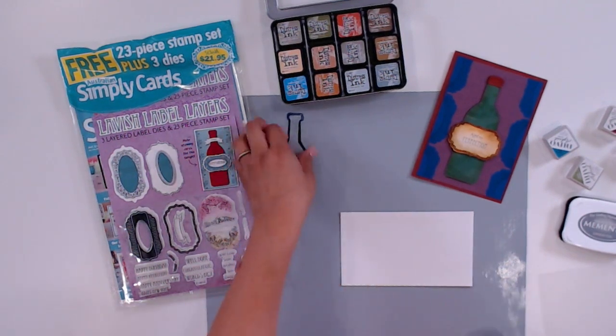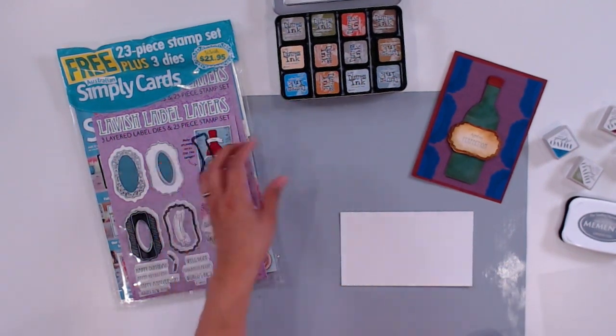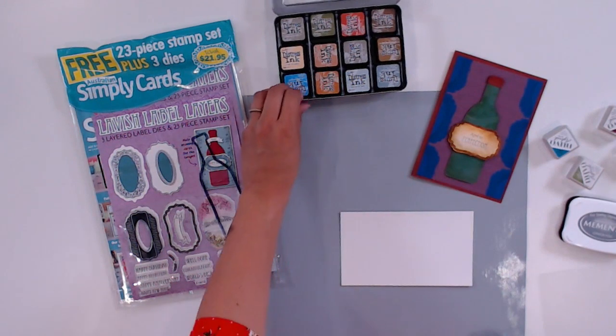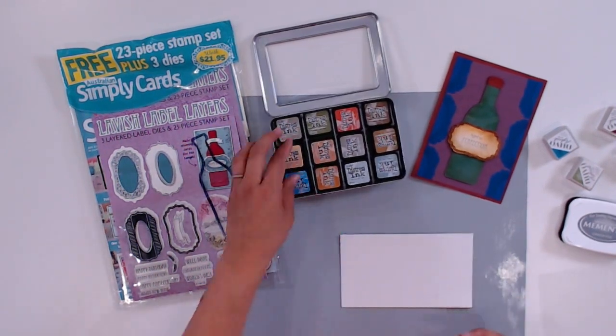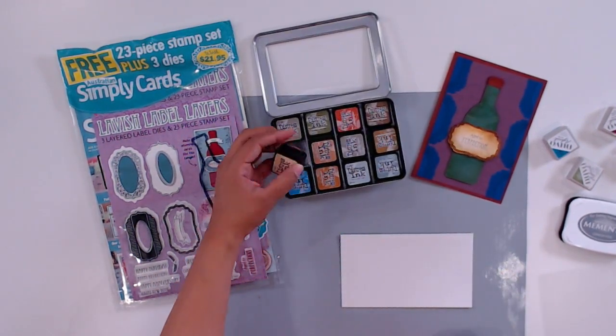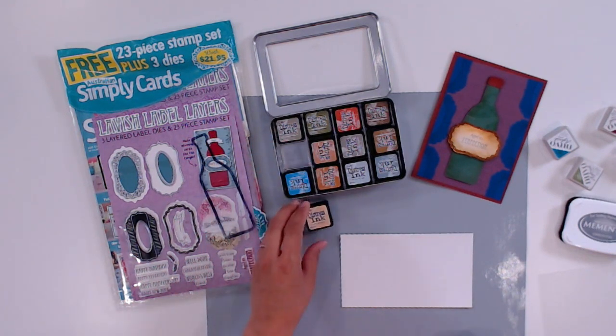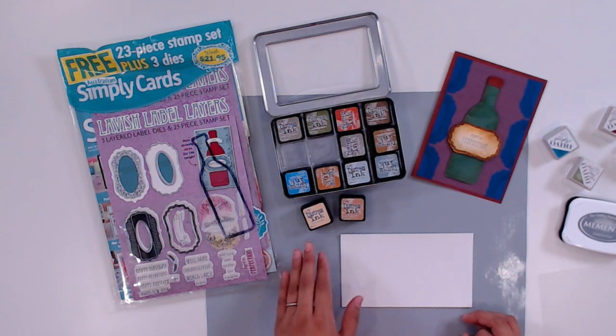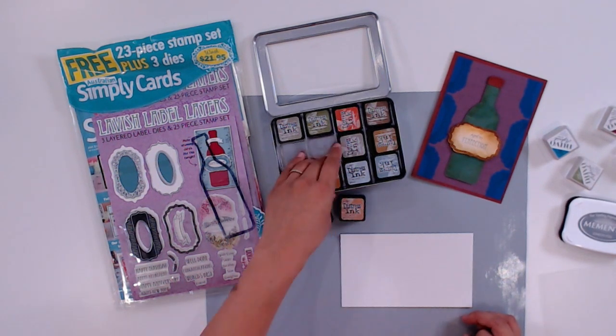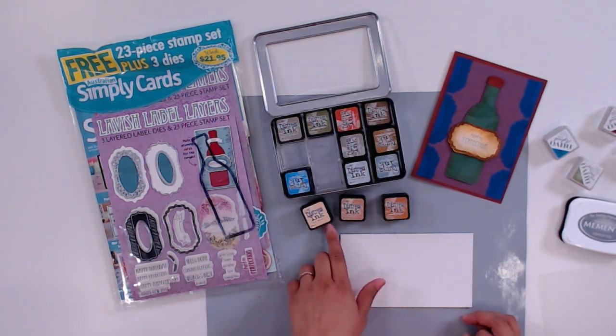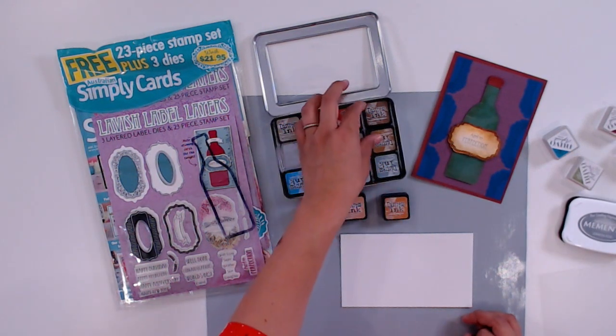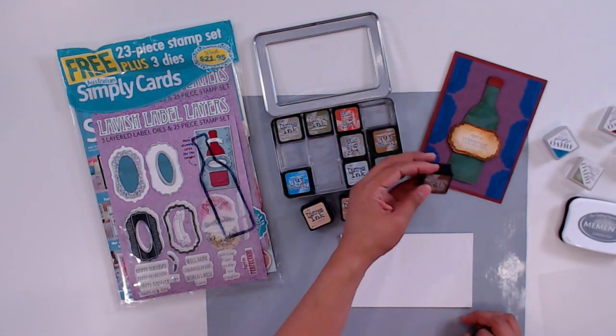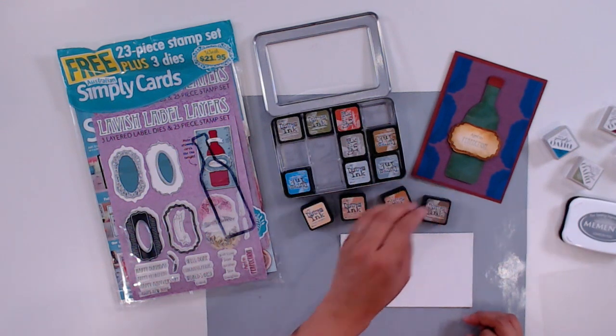In case you are unfamiliar with how to create that vintage distressed look, you're going to need some inks. I like Distress Inks for distressing paper. They're easy to work with and you're going to need various shades of beiges to browns. I'm going to be using Dried Marigold, Tea Dye, Rusty Hinge, and for the darkest color, Gathered Twigs.